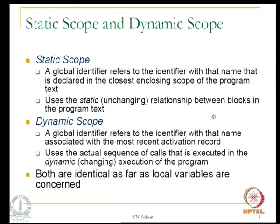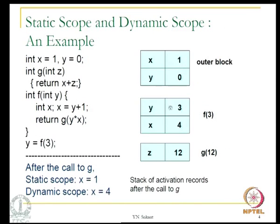Static scope implies that we consider the global variable as dictated by the program text. For example, in this program we have x equal to 1, y equal to 0 as global variables and there are occurrences of x here. When we call f of 3, the control comes to this function and the activation records would have been set up in this fashion.